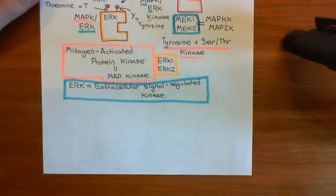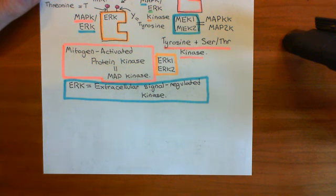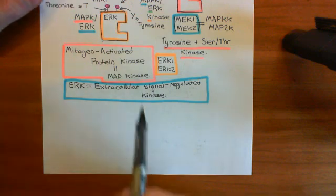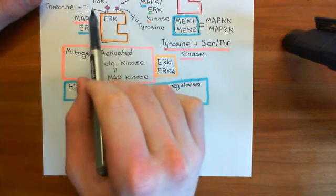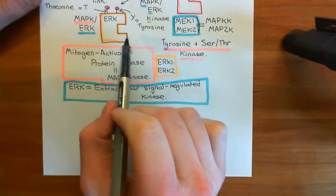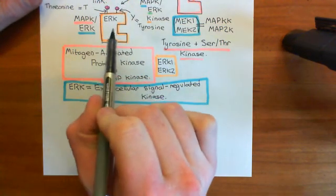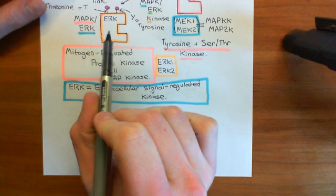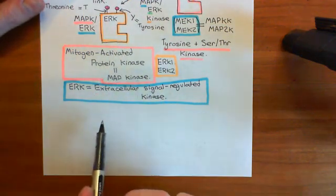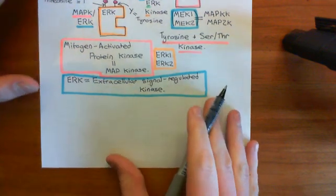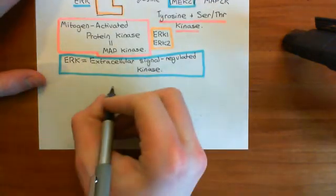Welcome back to this next video in which we are discussing the RAS-RAF-MEK-ERK pathway. We've now seen all of the members of that pathway. In the previous video we got to the culmination, which is that we had an activated ERK now, and this was currently in the cytoplasm. What's now going to happen is the activated ERK is going to go into the nucleus and it's going to phosphorylate transcription factors.